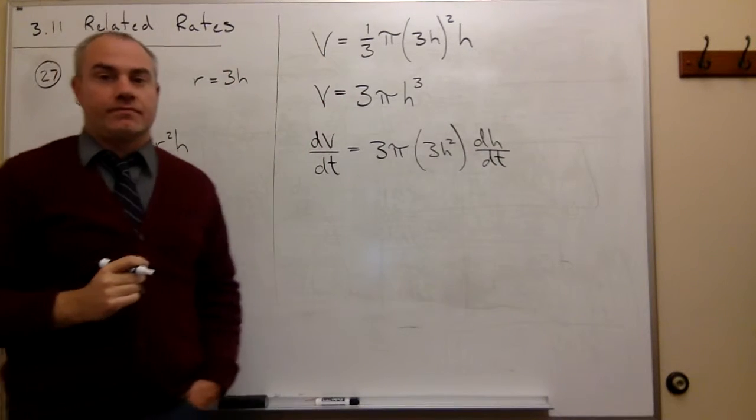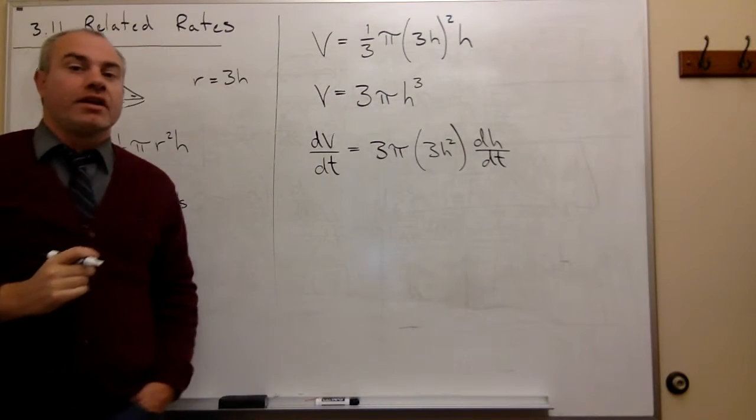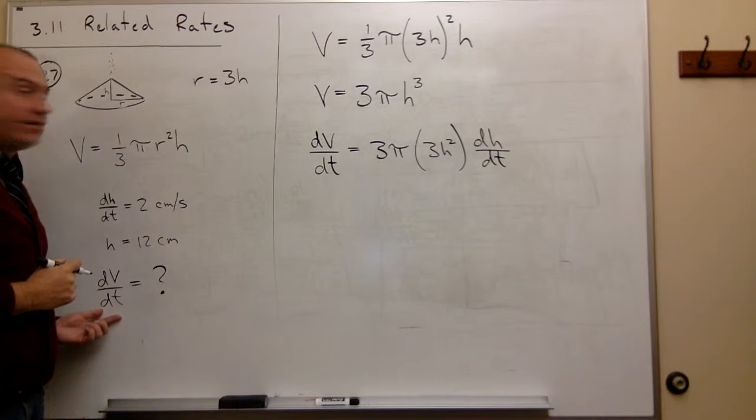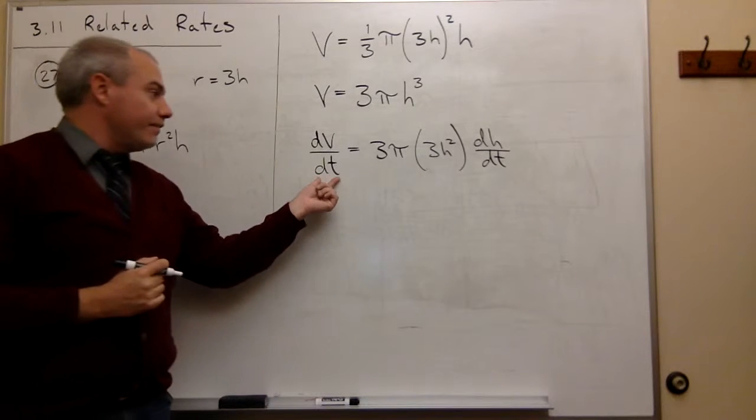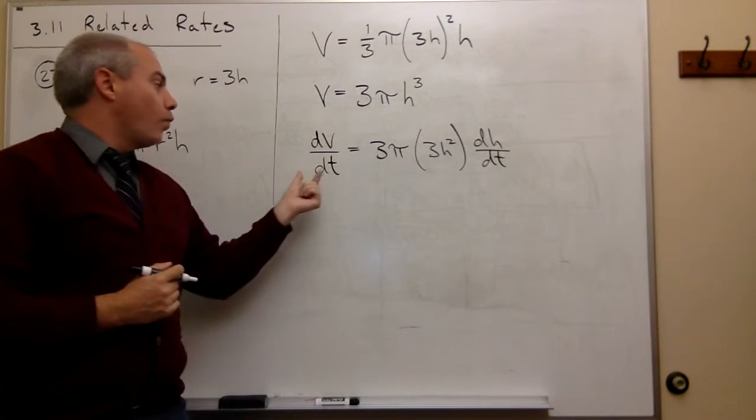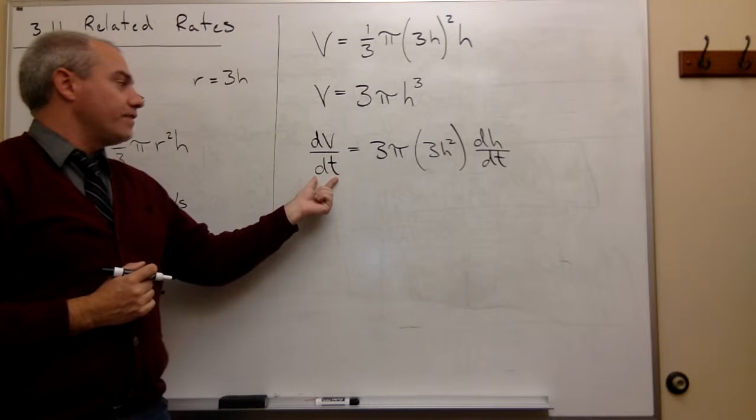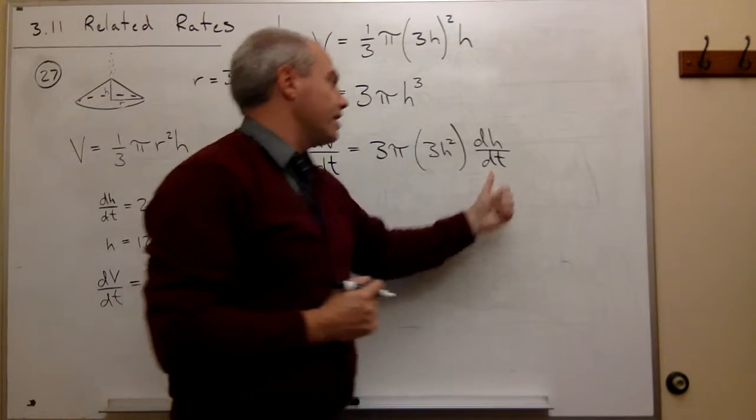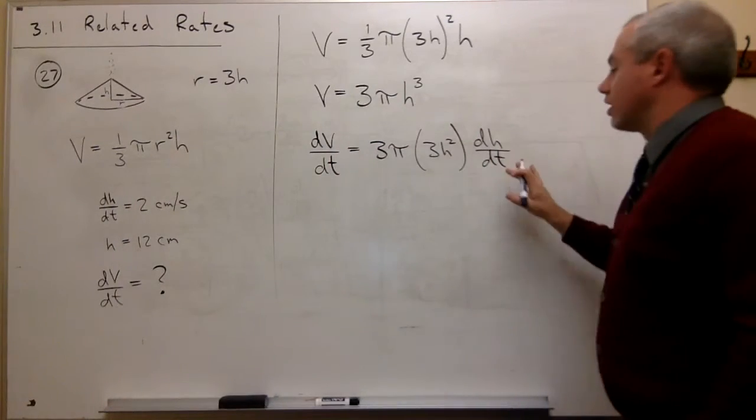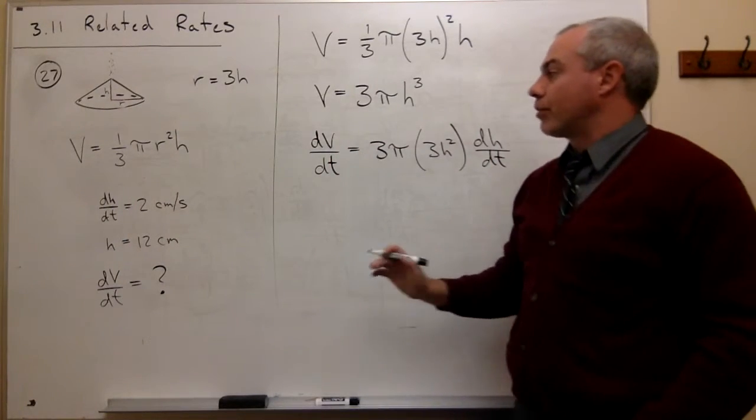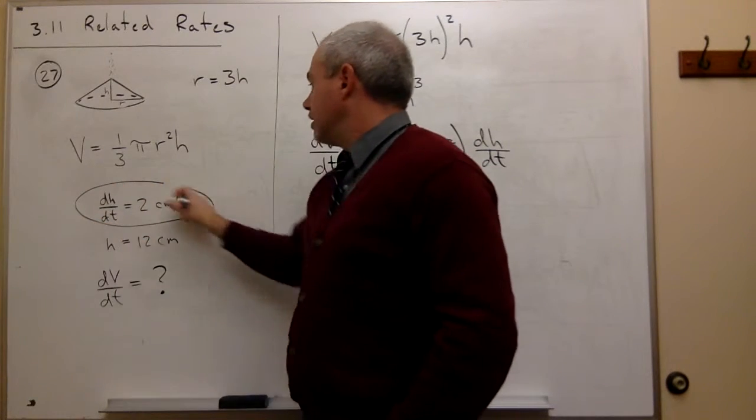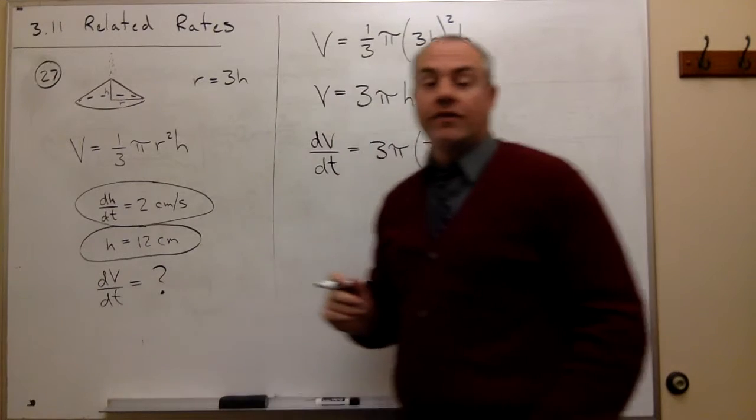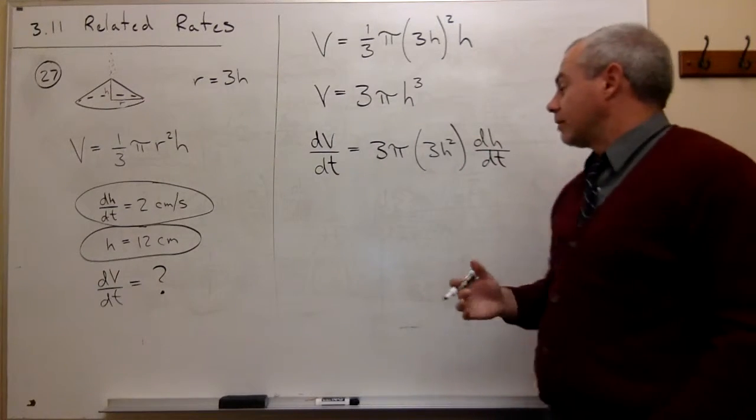All right, now what we're trying to find here, we're trying to find dV/dt. So according to this formula what I need to know to figure out dV/dt is I need to know what h is and I need to know what dh/dt is. But both of these are given to us in the original problem. We have that dh/dt is two